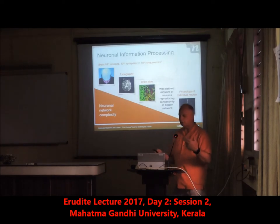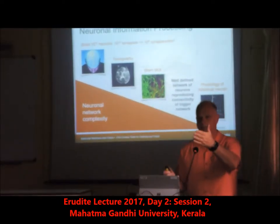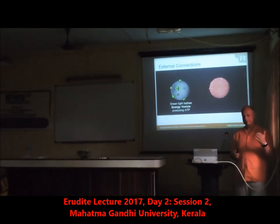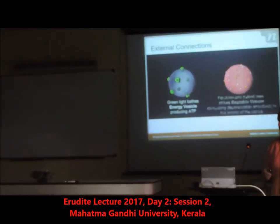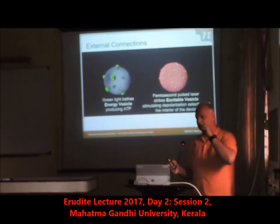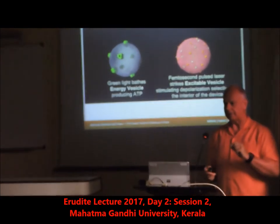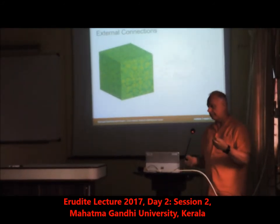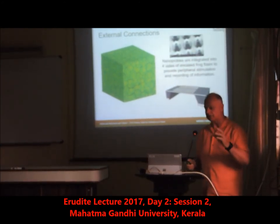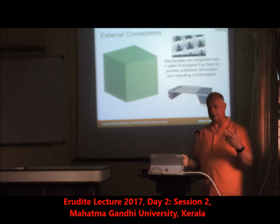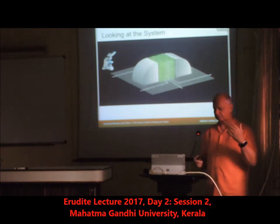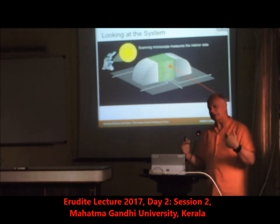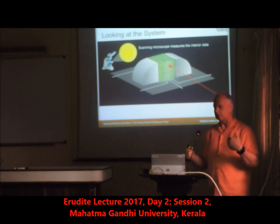If you look at biological information systems, you see that our brains evolve. We have a system where you power it with green light, and then you can interrogate and stimulate it using a femtosecond pulse laser system that uses two-photon excitation within particular regions of the interior. The end result is a system which is a cube — the one we're building is about 300 microns on a side. On the surface of the cube are arrays of electrodes, and we interrogate the system with a long-range optical system that we're building, which goes and interrogates and stimulates. How we extract the information is what we're working on right now.